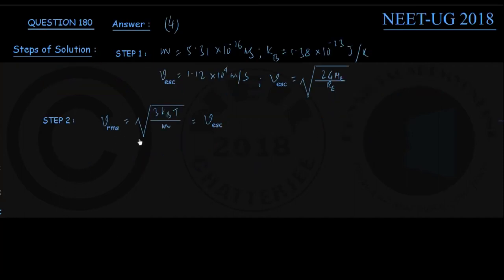If v_rms = √(3k_BT/m) equals v_escape, we can square both sides to write 3k_BT/m = v_escape². From here, the required temperature for the oxygen molecules is T = (v_escape² × m)/(3k_B).